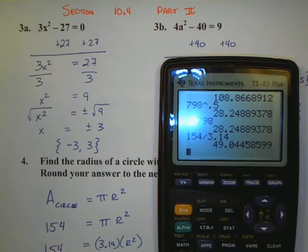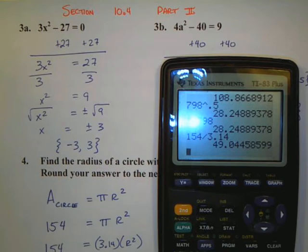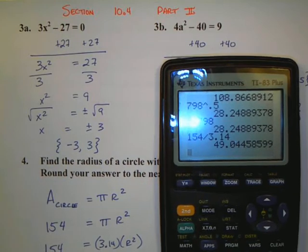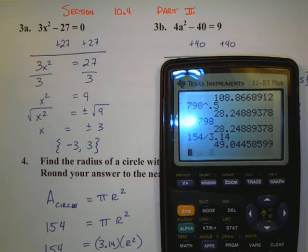I've got to get rid of that to isolate the r squared, and so I'm going to take 154, and I'm going to divide it by 3.14. And my answer is 49.044. I'm going to leave that on my calculator, because that way I can be more accurate as I continue the problem.